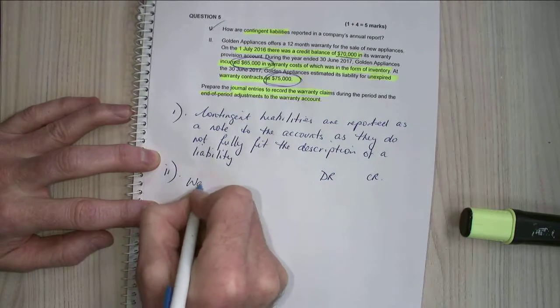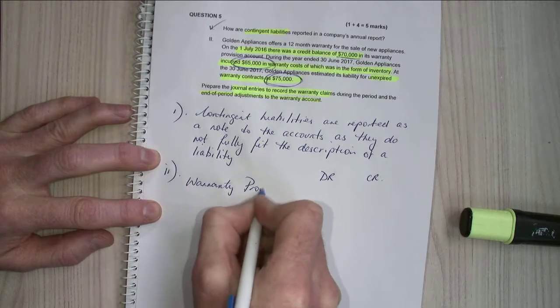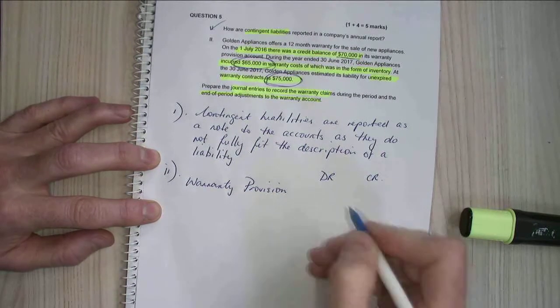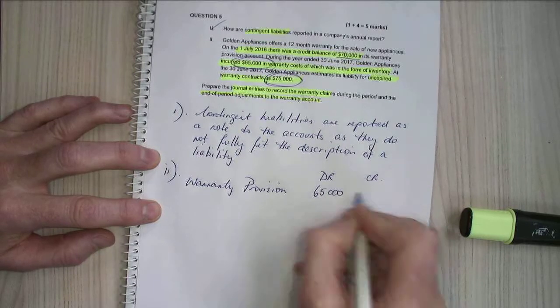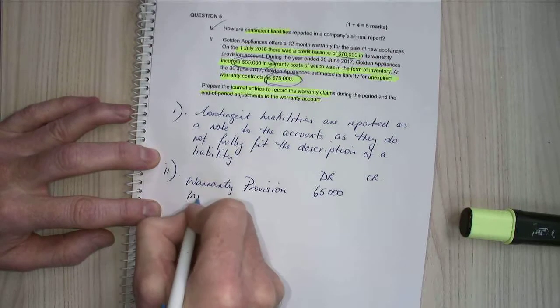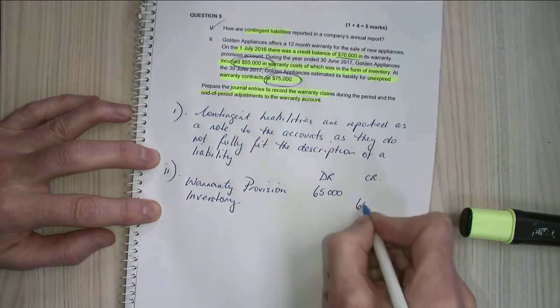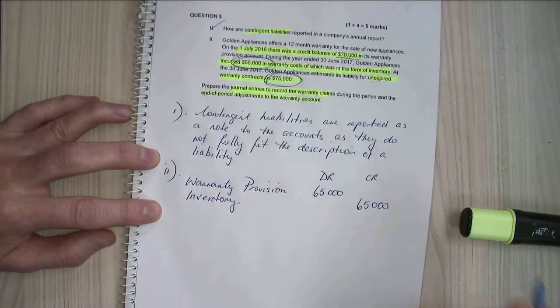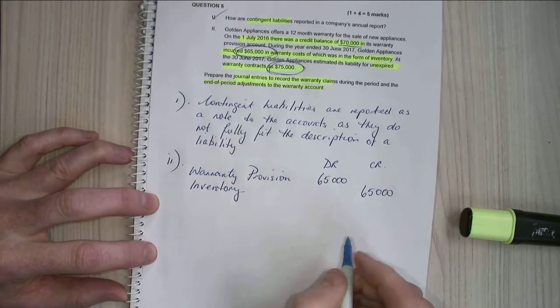So I'm going to have a warranty provision. Now this is going to be a decrease to my warranty provision, which is normally a credit balance, so I'm going to have it as a debit of $65,000. And my inventory is the other account that gets affected. So I've got $65,000, which is a reduction to my inventory. So that's part one.